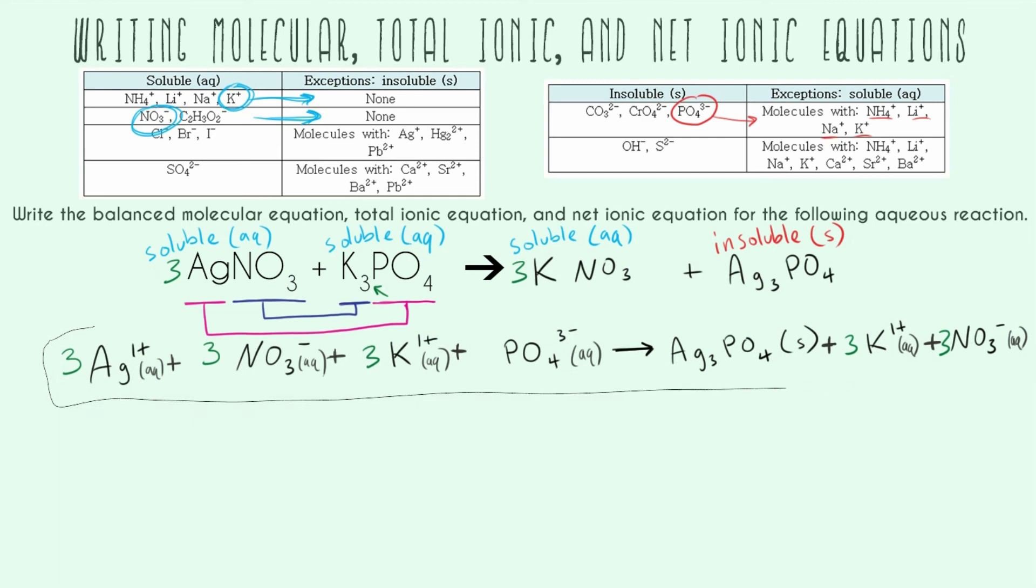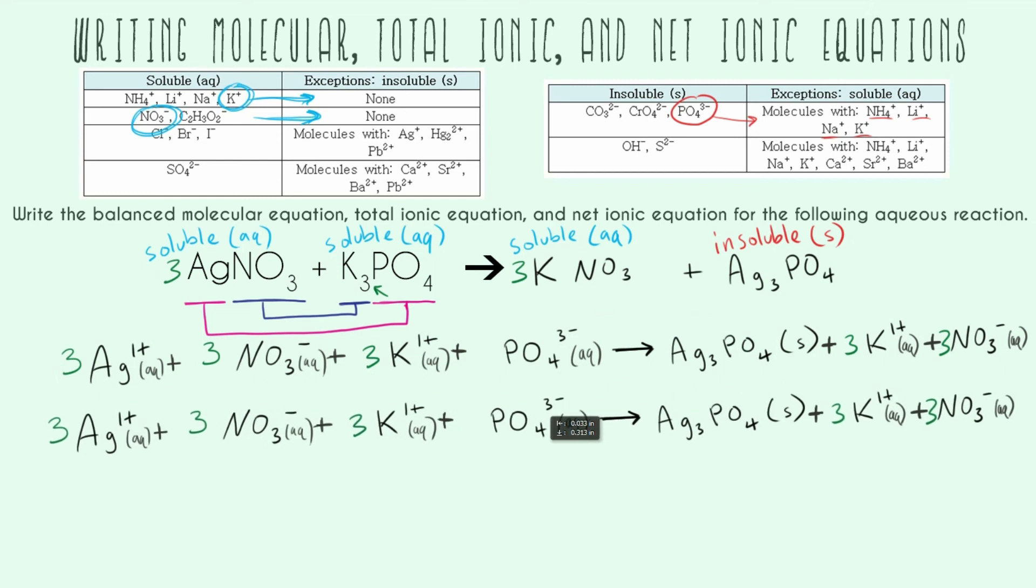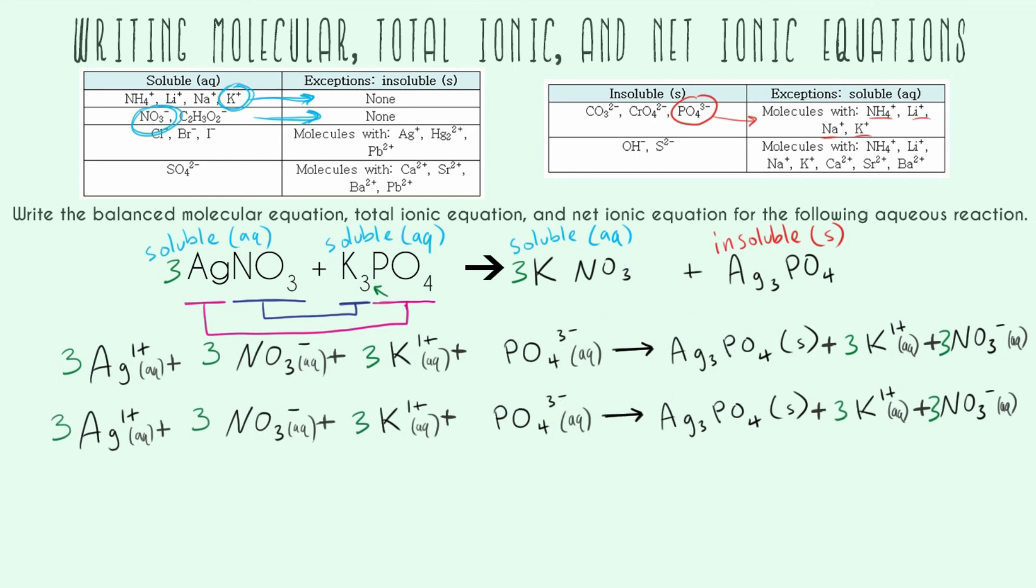From it, I can get my net ionic equation. I can cancel out all my spectator ions. Spectator ions mean things that aren't doing anything. If it's the exact same on both sides, it doesn't do anything. When I look around, I immediately see I have 3K⁺ on both sides - that means it doesn't do any reaction. It's the same in the beginning and end, so I can cancel them out.